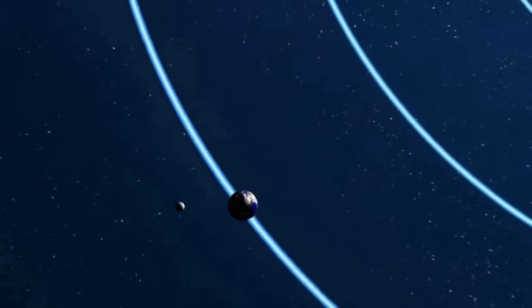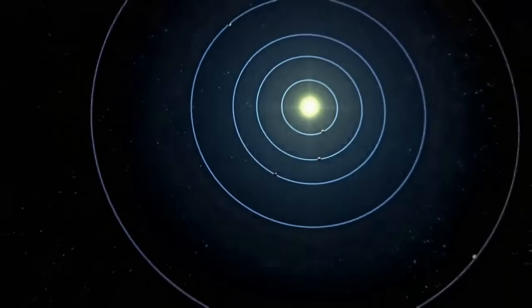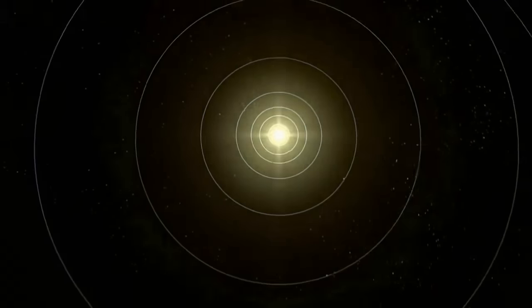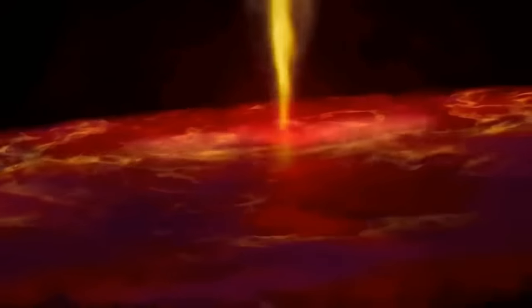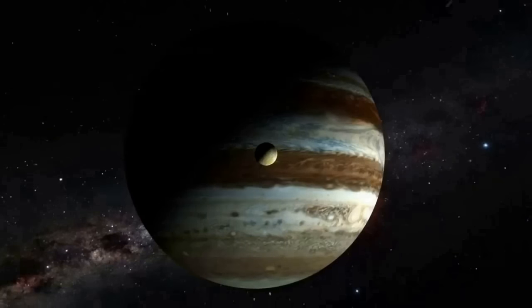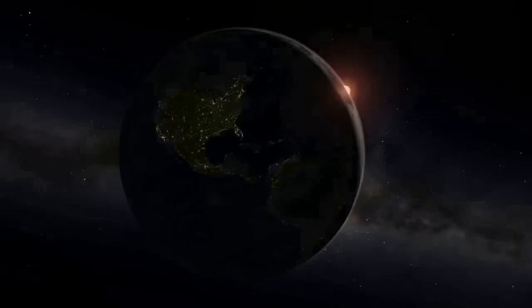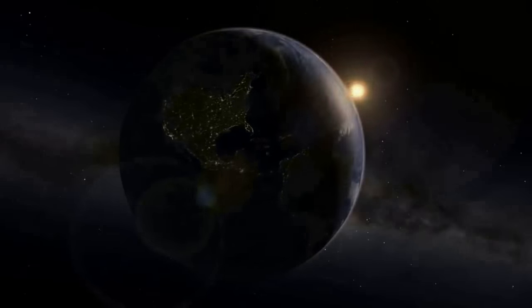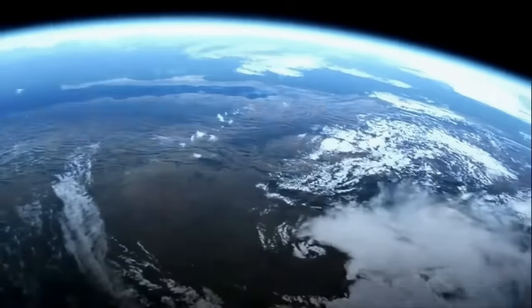Our solar system is full of oddities pointing to an imperfect birth and a malformed evolution. All of our planets go around the sun in the same direction that the sun is spinning. This is the same direction that the clouds within our original nebula began to rotate. Six planets spin around their poles in the same direction. For them, the sun rises in the east and sets in the west.